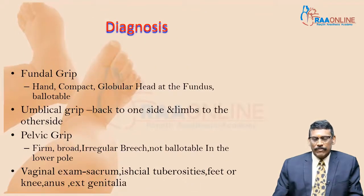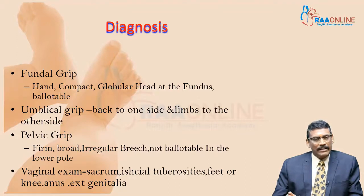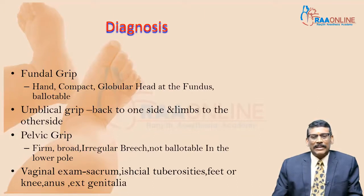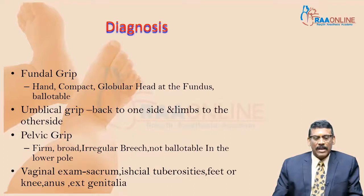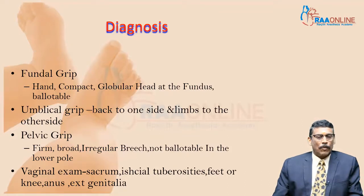In diagnosis of breech, on the fundal grip you will feel a compact, globular, ballotable head at the fundus. On the umbilical grip, you will see the back to one side and limbs to the other — not much different from cephalic. In the first pelvic grip, you will feel a firm, broad, irregular breech which is not ballotable in the lower pole.